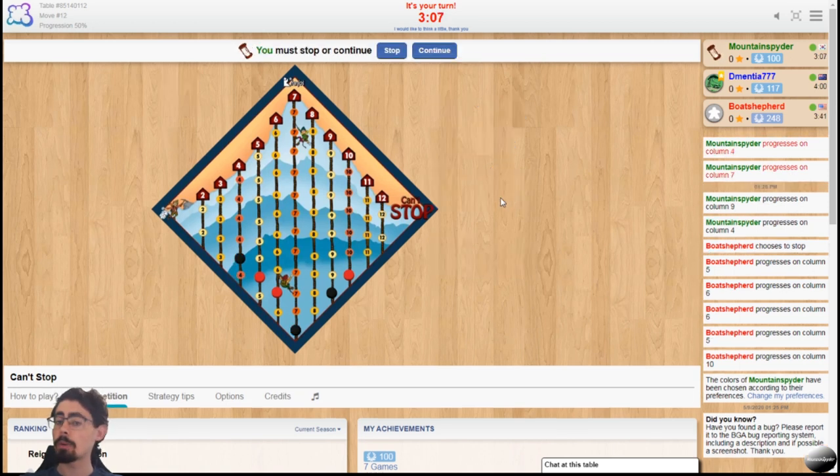This 4 and 7 works quite well, because 7 is the most common number you'll roll. Hence why it's the most difficult to go up that track. So now I've got no markers left, which means that if I choose to roll these dice again and I don't roll a 4, a 7 or a 9, I can't play and I'll now lose the progression on these tracks.